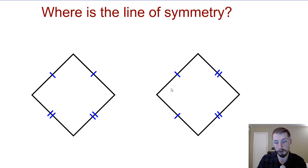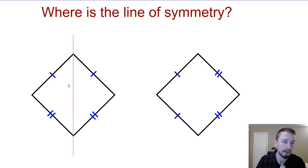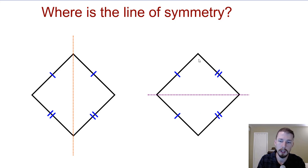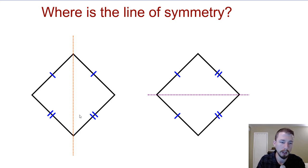By looking at the markings, even though both shapes look like squares, they are kites because we have consecutive sides that are congruent. The line of symmetry on this one would be vertical because this side matches up with that one and this side matches up with that one. If I drew a horizontal line of symmetry, they wouldn't match up because those sides aren't congruent. On the second one, it would be a horizontal line of symmetry. So this angle is the same as the angle on the bottom, the diagonal angles are cut in half, and the diagonals are perpendicular.